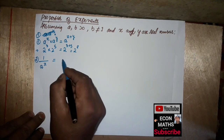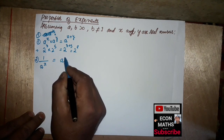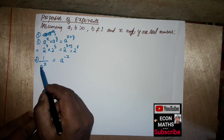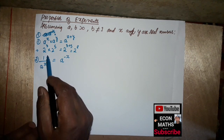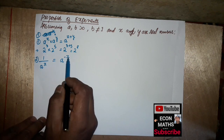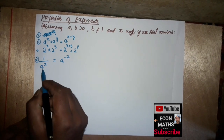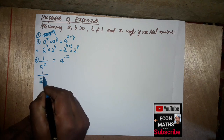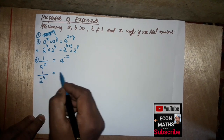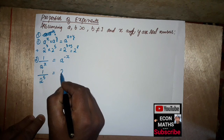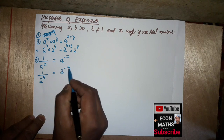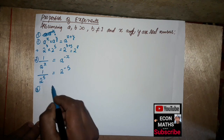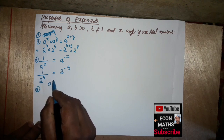The second property is: 1 over a to the power x is equal to a to the power minus x. This means when an exponent is taken to the denominator it becomes negative. For example, 1 over 2 to the power 5 becomes 2 to the power minus 5.